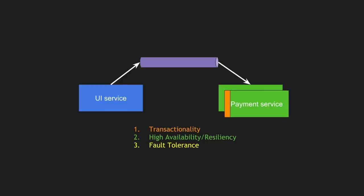For fault tolerance in asynchronous communication, compared to synchronous where the UI service had to act when the payment service went down, here the transactions pile up in the queue, so you don't have to implement the same level of fault tolerance. However, you still need a slight amount of fault tolerance in case the queue goes down — you need a backup way to ensure queue errors are not cascaded to the UI service.